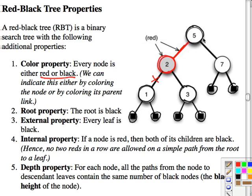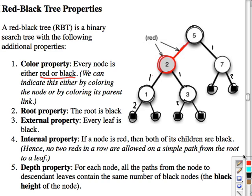Looking at an example, counting from the root: one, two black nodes on one path; one, two on another — the same number of black links from the root to every leaf. That's true for every node in the tree, not just the root, which gives us the black height of that node. It turns out this corresponds to the height of the node in the corresponding 2-4 tree.